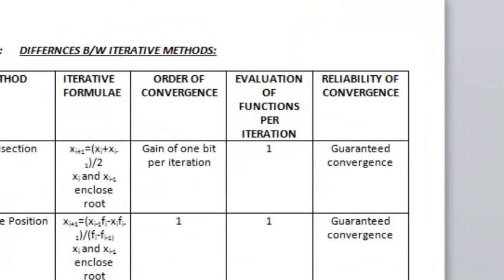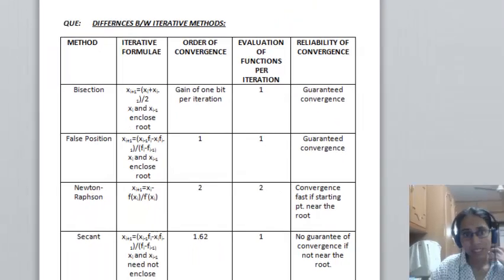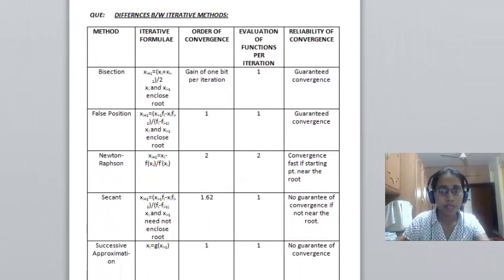Evaluation of function per iteration. For all methods except Newton-Raphson method, it is 1. And for Newton-Raphson method, it is 2, which is very good.